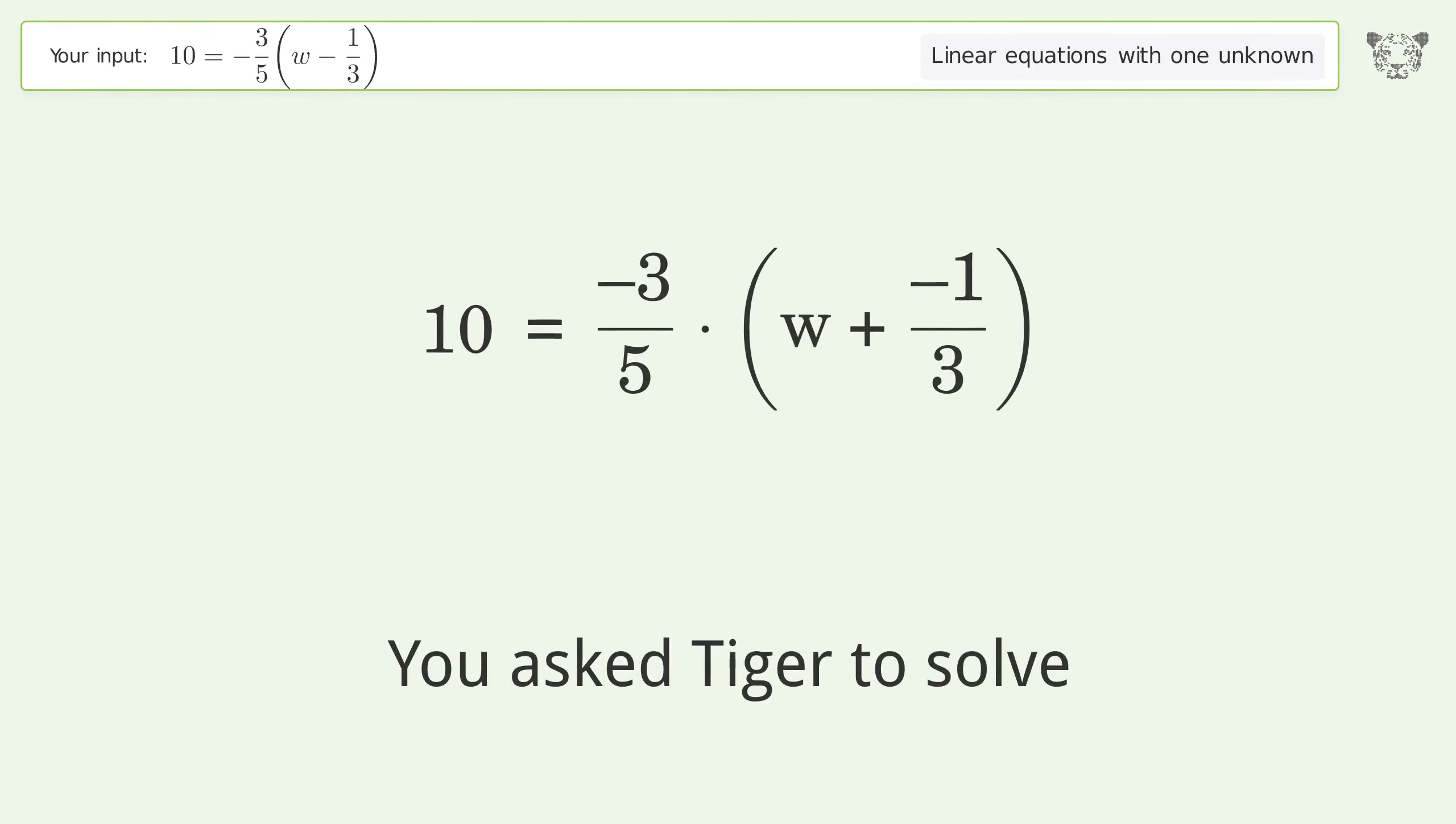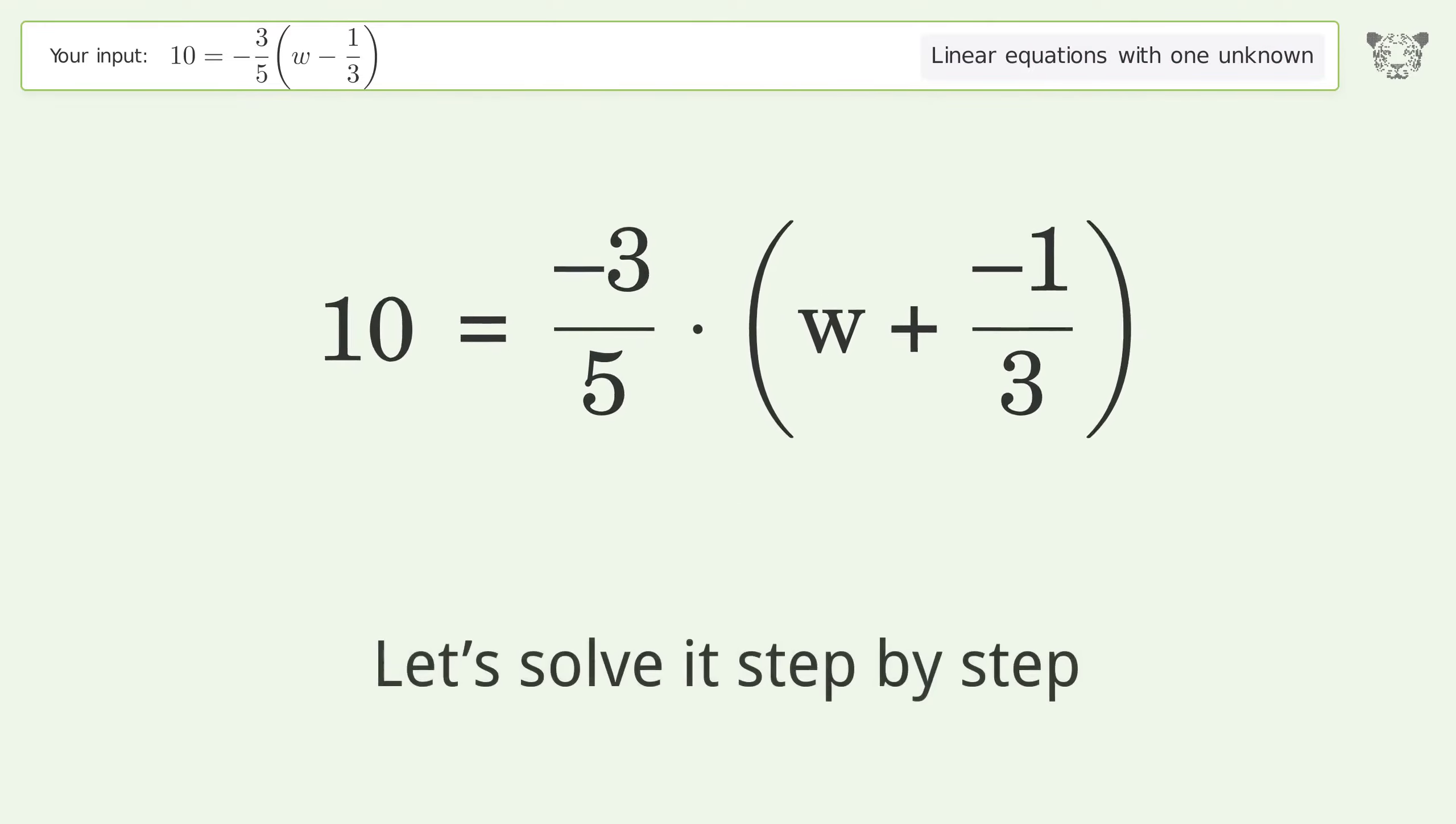You asked Tiger to solve this. This deals with linear equations with one unknown. The final result is w equals negative 49 over 3. Let's solve it step by step.